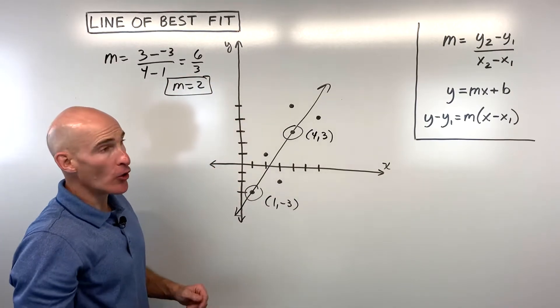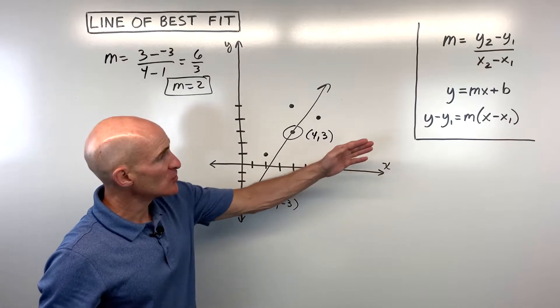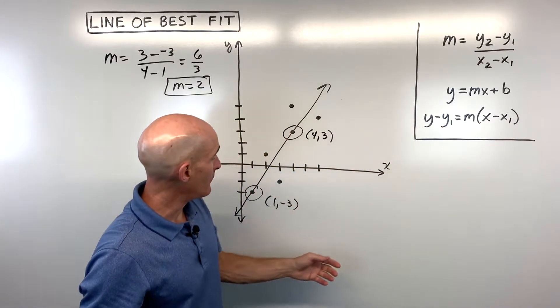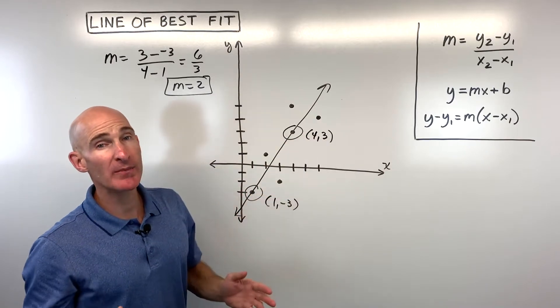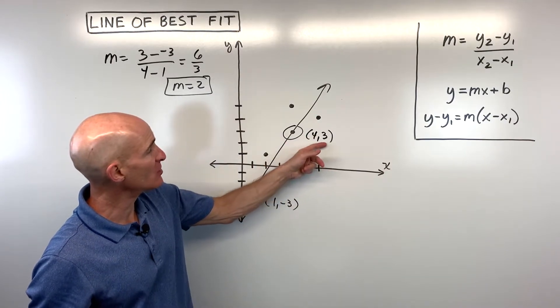Okay, so now we have the slope. Now, I oftentimes like to use the point-slope form if I have a point on my line, and I have the slope. You can use either point, you don't want to mix or match, I'll just go ahead and use this point right here.